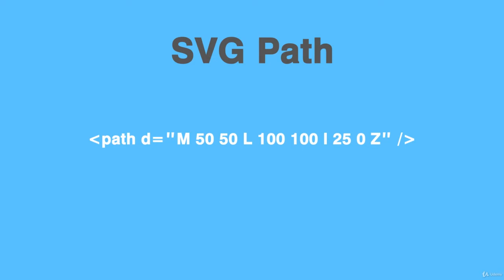Inside we have 'M 50 50', 'L 100 100', and then another lowercase 'l 25 0', and then 'Z'. This may look like gibberish at first, but let's dissect this a little bit. Think of this path code as some sort of composition — like composing a melody — and let's deconstruct what's happening.